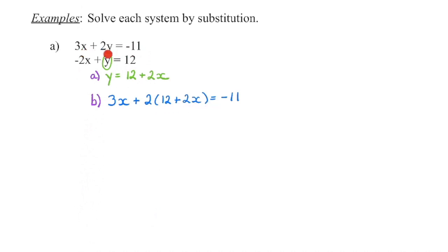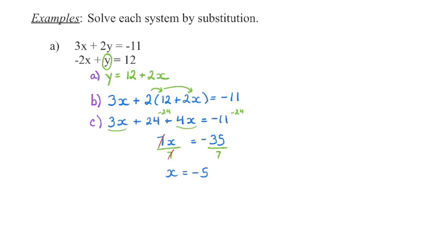This equation is identical to the first one we have here — the only difference is instead of the Y, we've substituted in what Y equals. The reason we do that is so that we can now solve the equation. We can't solve an equation if there are two different variables in it, but if you look now we only have one variable: X. So now we can go back to what we've done previously in order to solve for the value of X. We distribute this 2 in to eliminate the brackets, combine like terms, and then divide out that 7 to get one X has a value of negative 5.